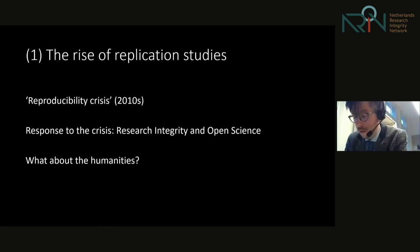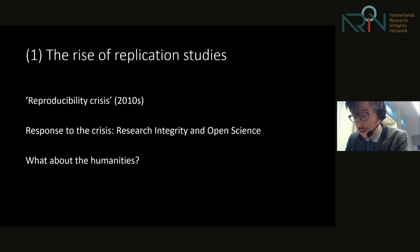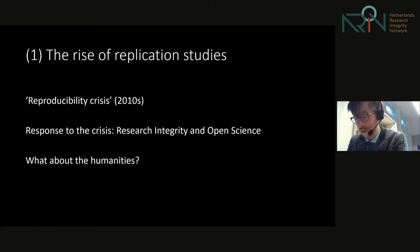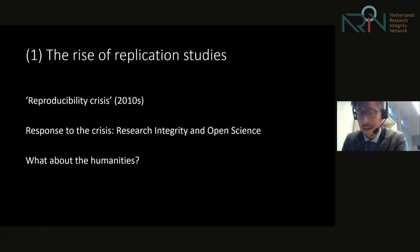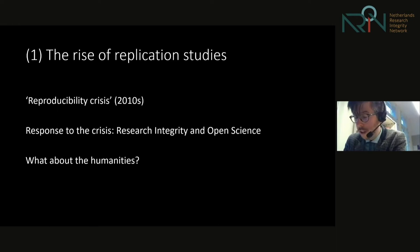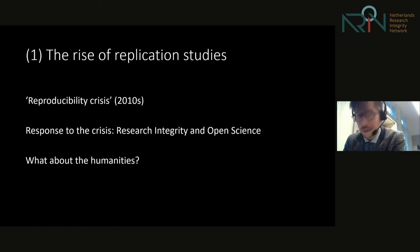In short, we can understand the reproducibility crisis as part of a larger integrity crisis in science, with proposed solutions in line with the general initiatives of open science. The fact that the reproducibility crisis became part of a more structural crisis makes it no surprise that questions of replication and replicability extended beyond the social and biomedical sciences. In 2018, the question of whether the humanities too needed the replication drive was raised.